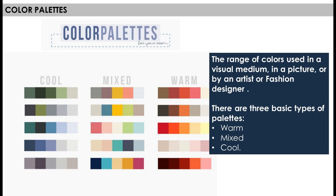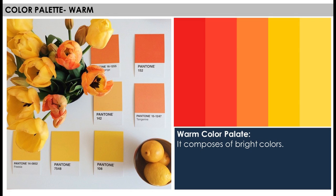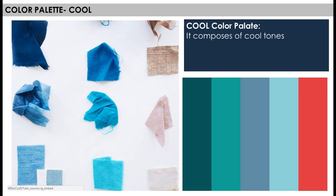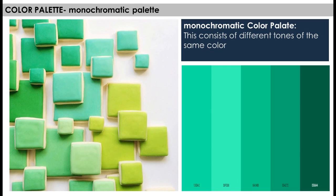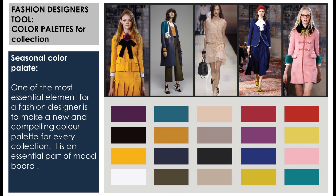Color palettes: a color palette is the range of colors used in a visual medium — a group of color choices made to create a collection. There are three basic types of color palettes: warm, mixed, and cool. A warm color palette contains all warm colors ranging from yellow to red. A monochromatic color palette uses tones or shades of just one color. Fashion designers use color palettes to create their collections, and one of the most essential parts of the design process is focusing on the right color palette, which is also a key part of a mood board.